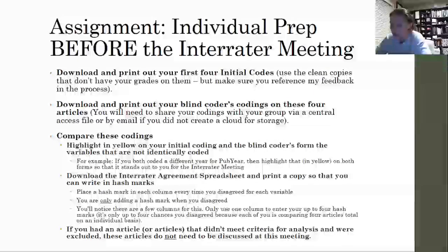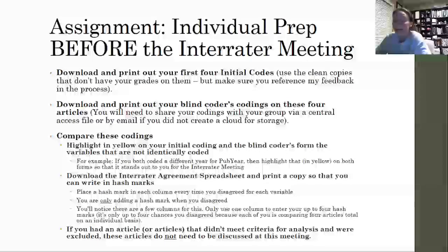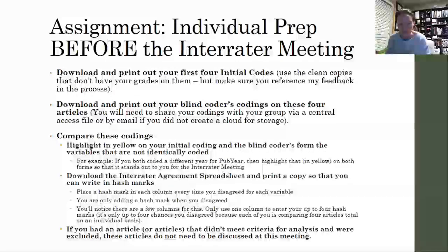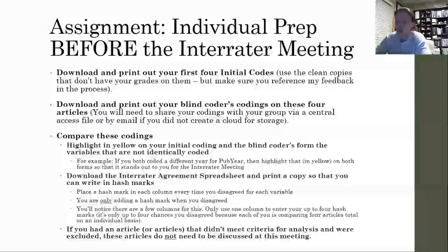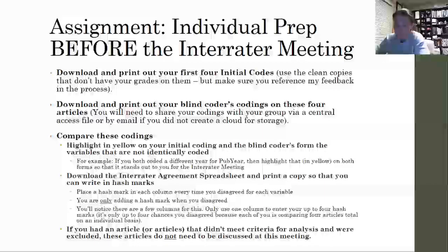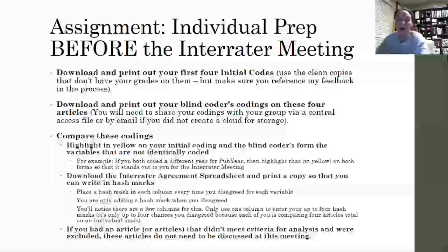For example, if you notice that for pub year you both coded a different year, highlight that on both forms. The reason for highlighting is to draw your attention to it during the inter-rater meeting so you don't have to be comparing on the fly — that wastes a lot of time. If you compare ahead of time and know how many variables you have to discuss for each article, this saves your group a lot of time. You're going to do that for each article, comparing initial to blind code and highlighting what's different. Then individually, download a copy of the Inter-rater Agreement Template Spreadsheet from the module this week.